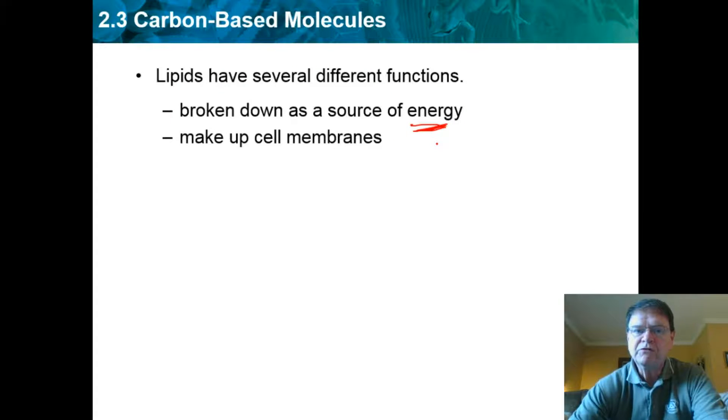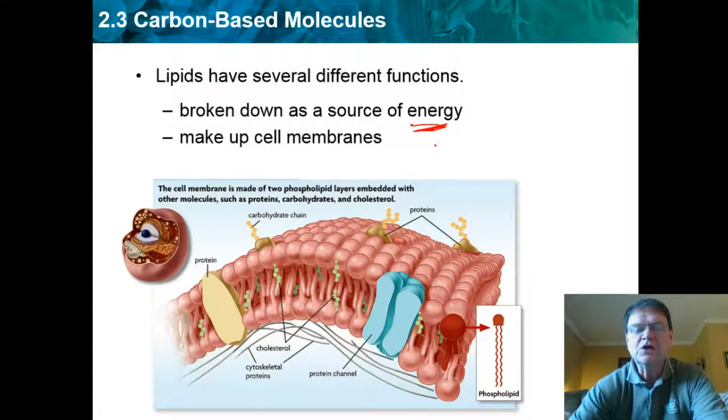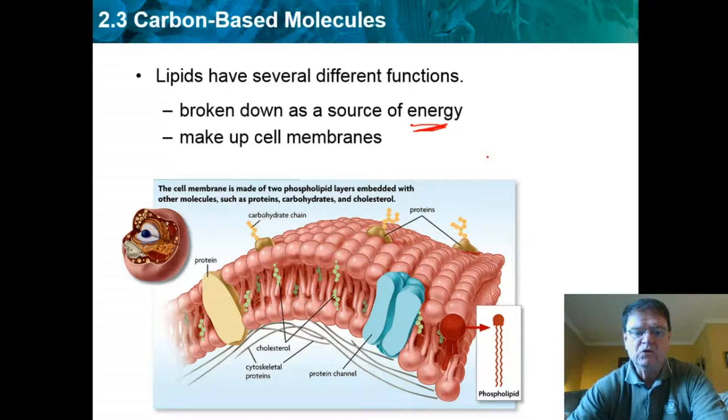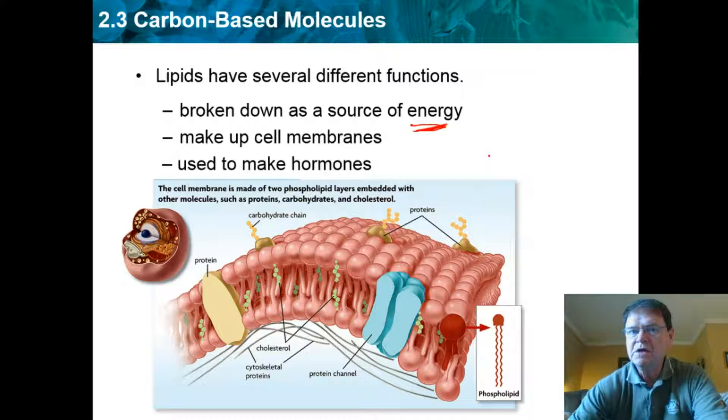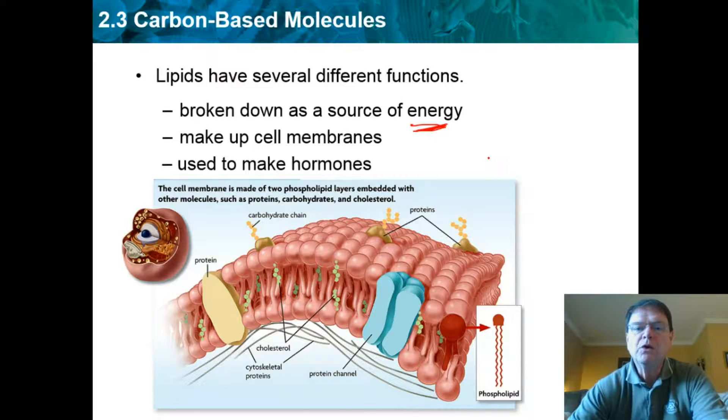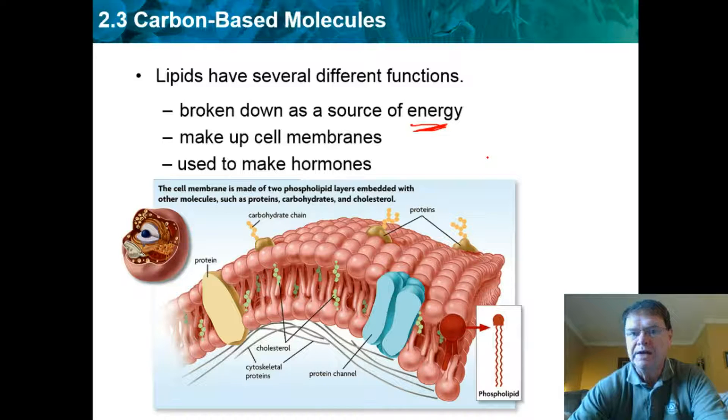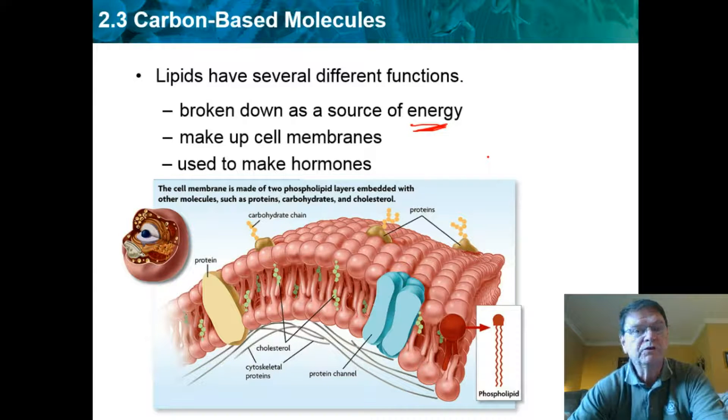They also serve a very important function in the cell membrane. As you can see here, every one of these red molecules that you see in the cell membrane is a phospholipid. Many hormones are also made up of lipids as well. Hormones are those molecules that are used to communicate information throughout the body and are part of the control and feedback system, maintaining homeostasis.